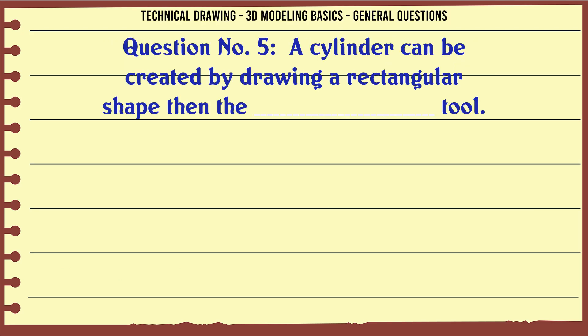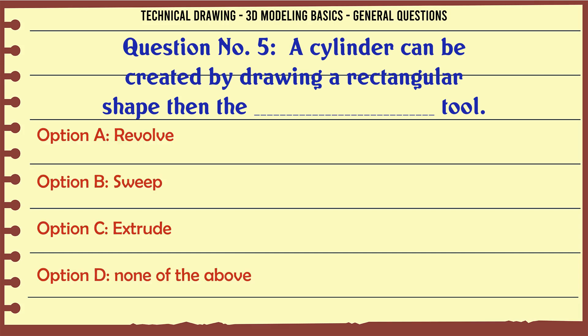A cylinder can be created by drawing a rectangular shape then the tool. A. Revolve. B. Sweep. C. Extrude. D. None of the above. The correct answer is